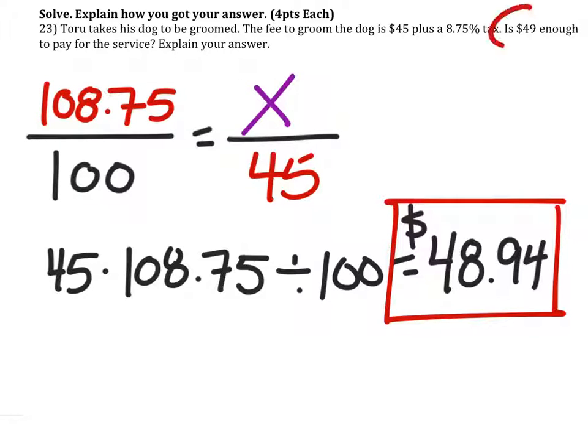If Toru has $49, then he does have enough. So the answer is yes, he does have enough. And the reason why, well, it's shown in the work. It would only cost $48.94, so he would have $0.06 left over.